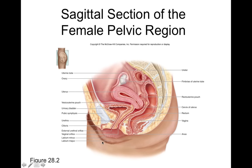Some other external reproductive structures include the labia majora, which is made of thin skin that includes hair. Just medial to that, we find labia minora — a thick, keratinized stratified squamous epithelium. Deep in the labia minora, we also find erectile tissue called the bulb of the vestibule.